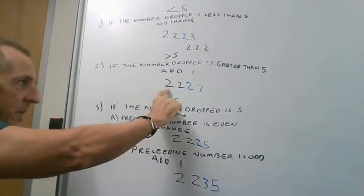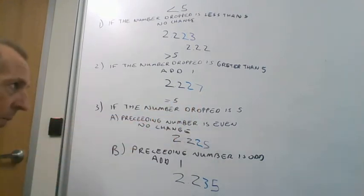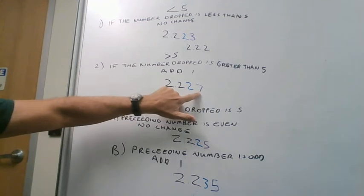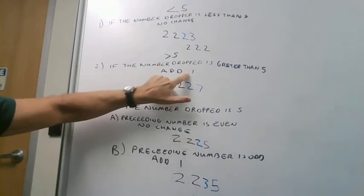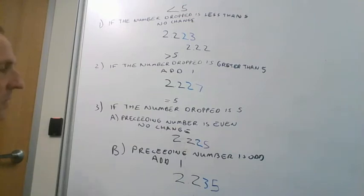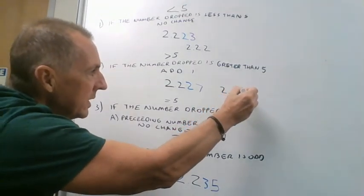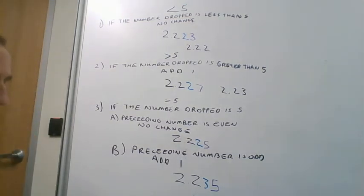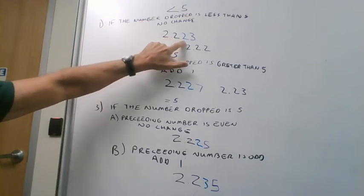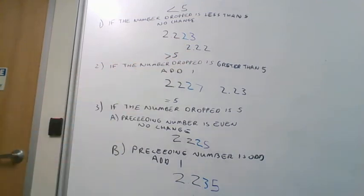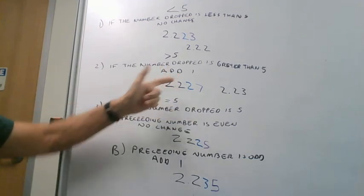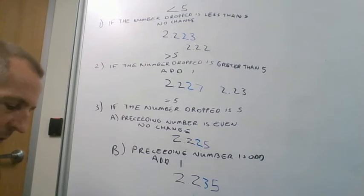Looking at the next number, we want to round to three significant figures. We count out one, two, three — and that fourth digit is our decision point. We ask: is this number less than five, greater than five, or equal to five? In this case it's greater than five, so we add one to the preceding number and it rounds to 2.23. Really, when we round we're asking which number this is closest to — 2.22 or 2.23 — and we can see it's closer to 2.23.